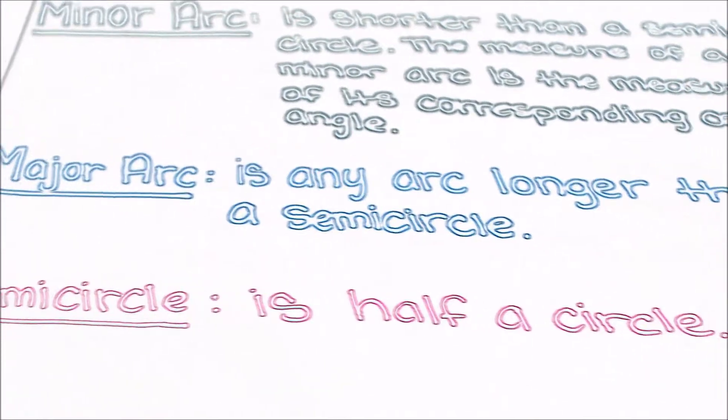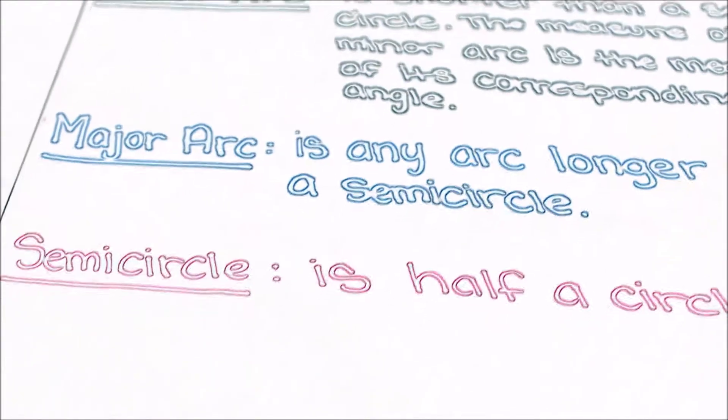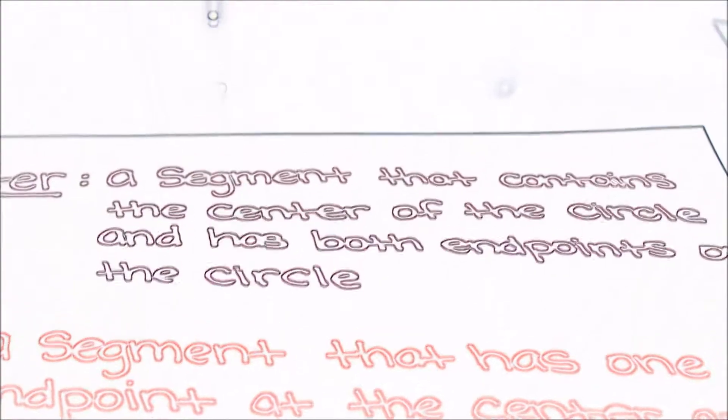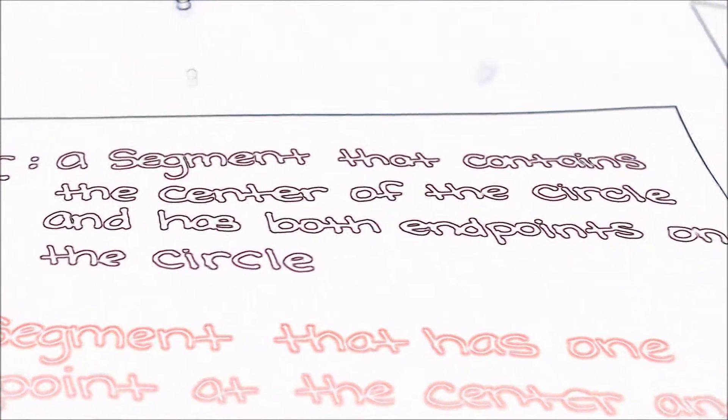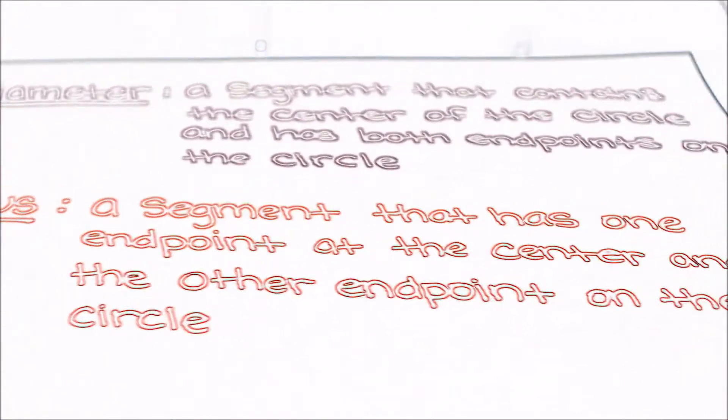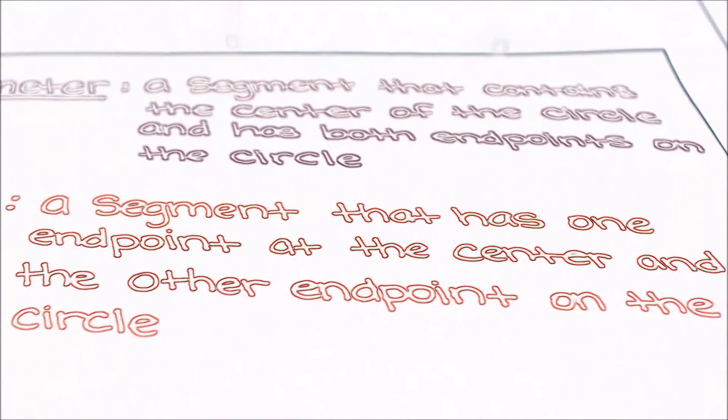A major arc is any arc larger than a semicircle. A semicircle is half a circle. A diameter is a segment that contains the center of the circle and has both endpoints on the circle. A radius is a segment that has one endpoint at the center and the other endpoint on the circle.